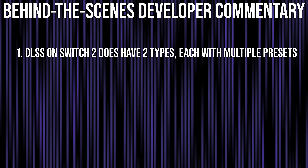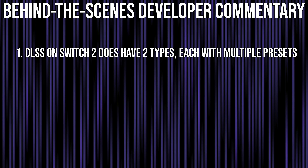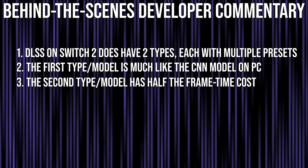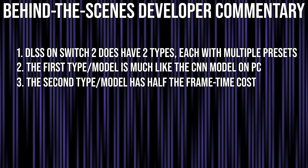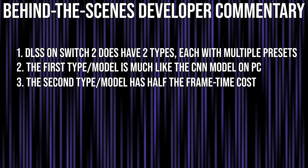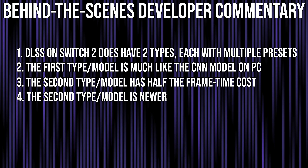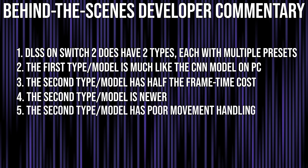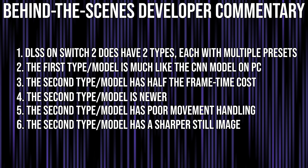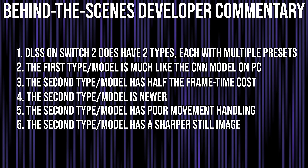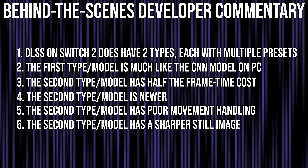Wanting to confirm our visual findings of two different types of DLSS, we asked a respected developer behind the scenes who is familiar with the matter. They confirmed that DLSS on Switch 2 has two types — one that is much like the CNN presets on PC, and one that has presets that are roughly half the cost in terms of frame time than the CNN model. This cheaper model of DLSS is newer and in their experience it causes image quality to have the characteristics I described: it suffers in movement, although it may be sharper in stills.